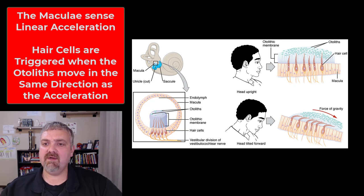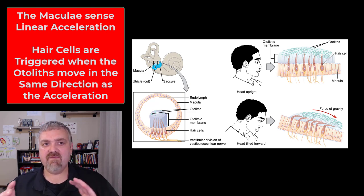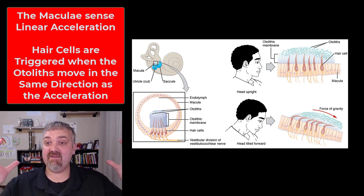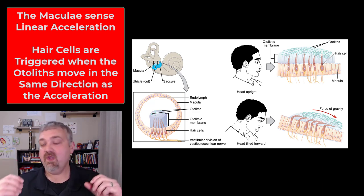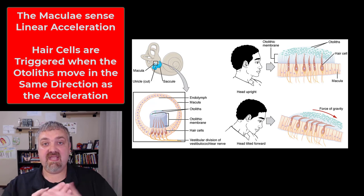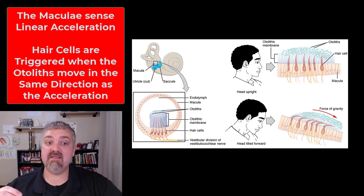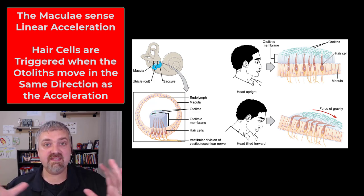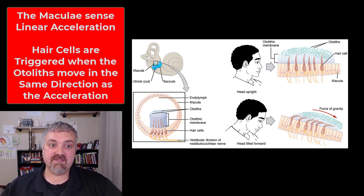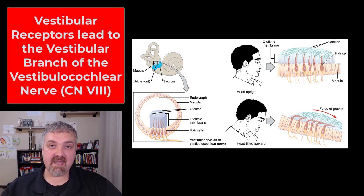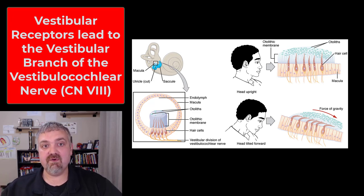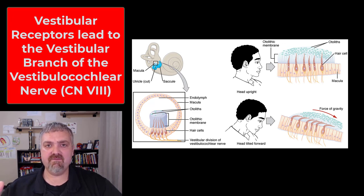The macula is looking for these different types of linear acceleration — like when gravity acts on the head as it tilts, or if the head starts to move in a straight line. The otoliths move because of the force of gravity, triggering the hair cells. Those hair cells send information to the vestibular ganglia, up the vestibular branch of the vestibulocochlear nerve — cranial nerve 8 — and then it synapses with the vestibular nuclei.